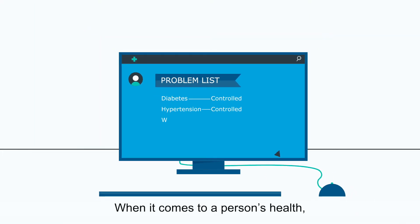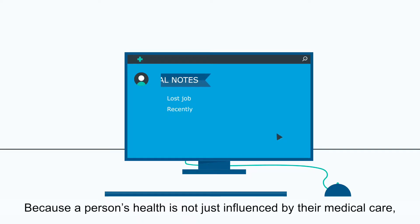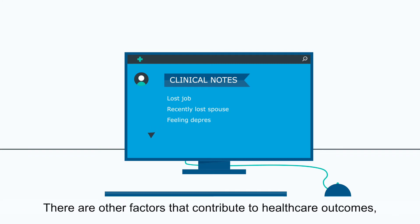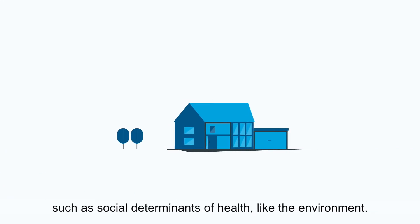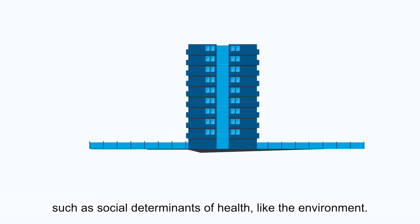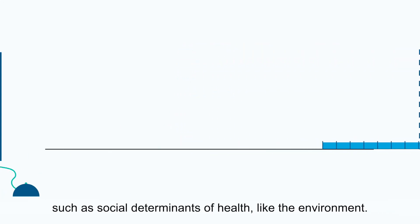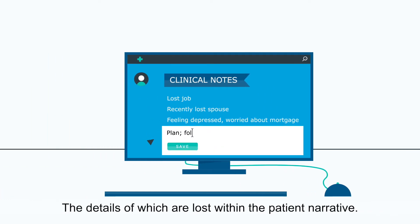When it comes to a person's health, are you really getting the full picture? Because a person's health is not just influenced by their medical care. There are other factors that contribute to health care outcomes, such as social determinants of health like the environment, the details of which are lost within the patient narrative.